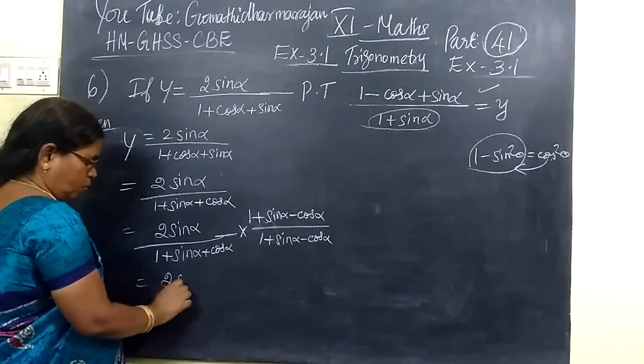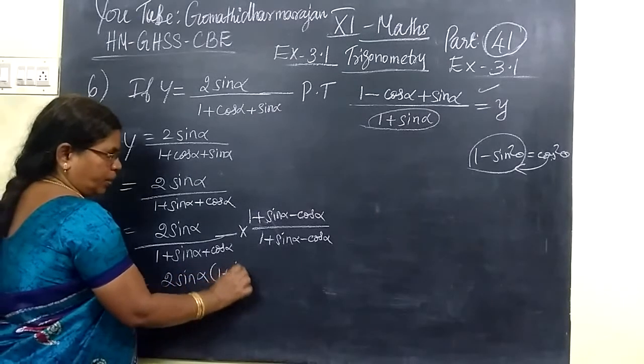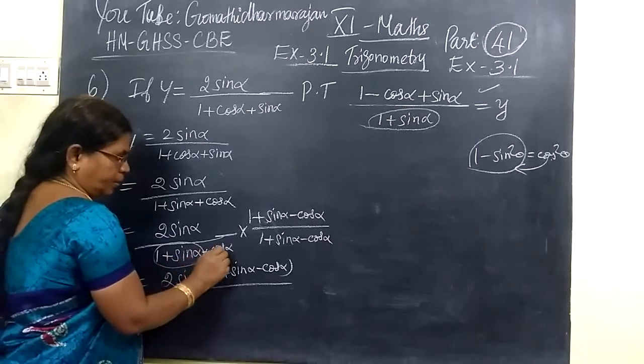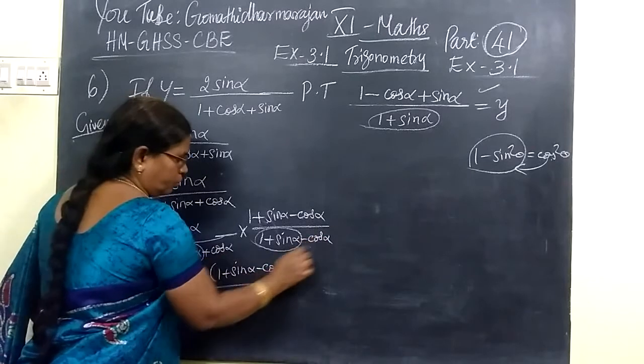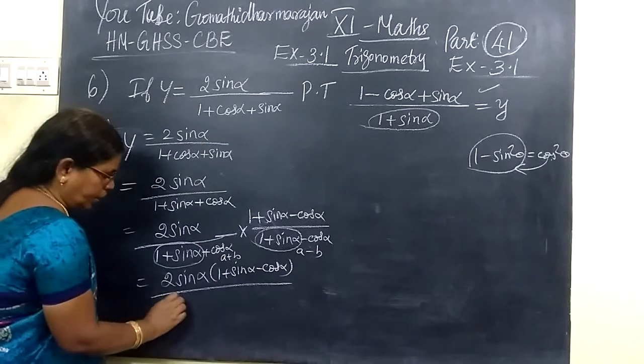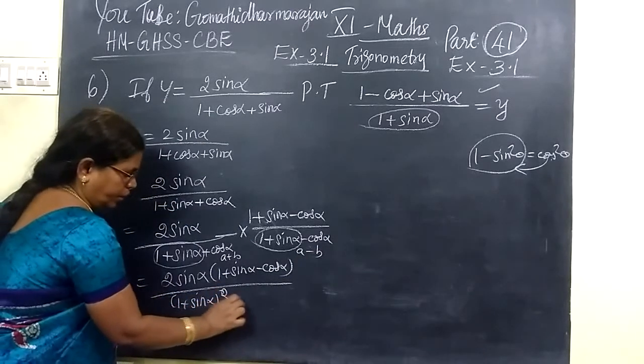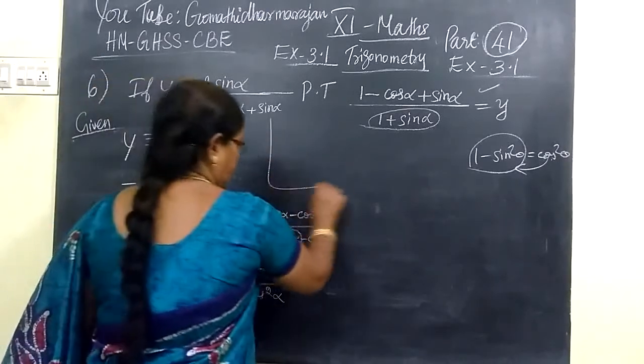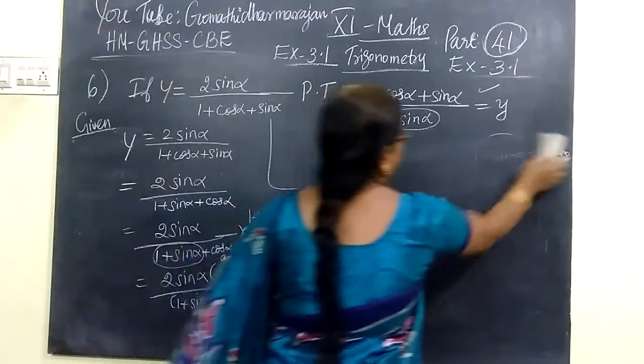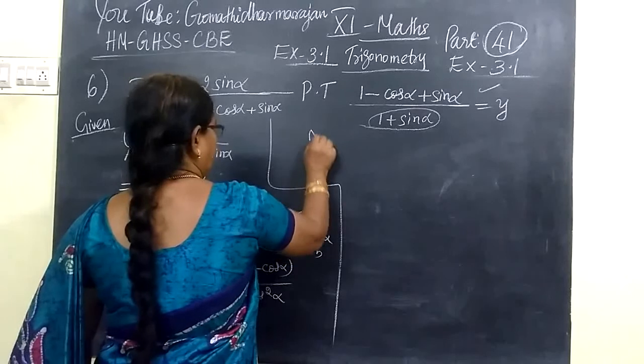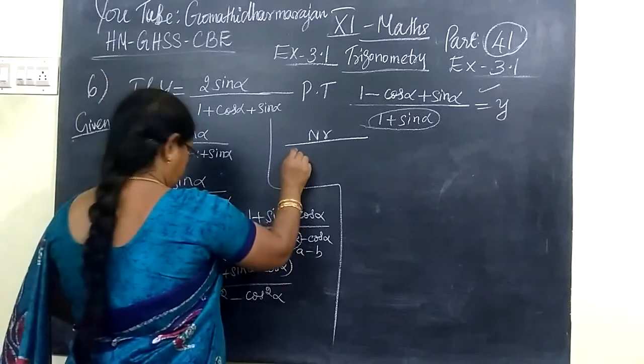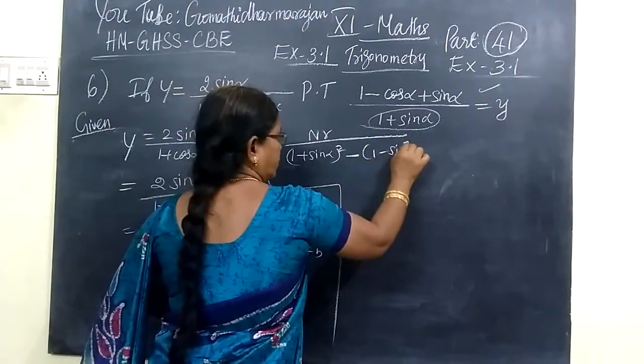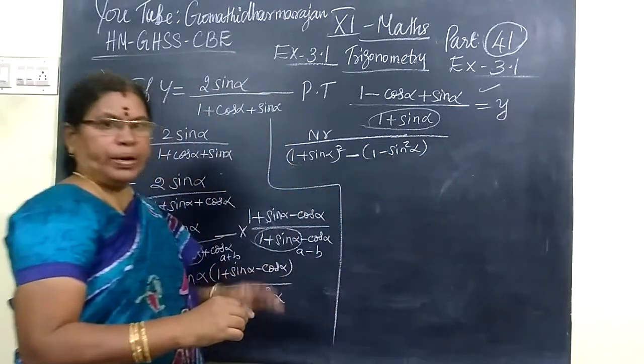We are writing 2 sin alpha multiplied by 1 plus sin alpha minus cos alpha divided by - this is A plus B, A minus B formula. So it is A square minus B square. If you have cos side alpha, you have 1 minus sin square alpha.